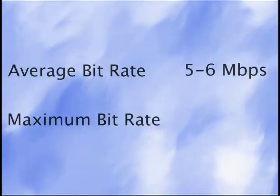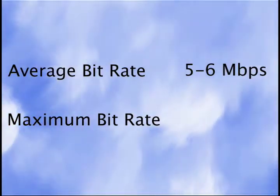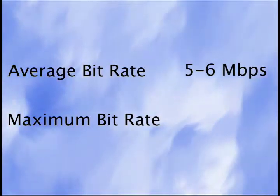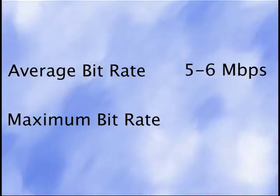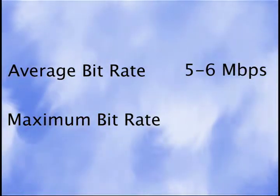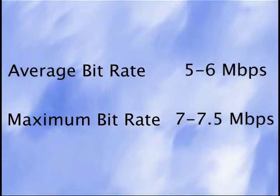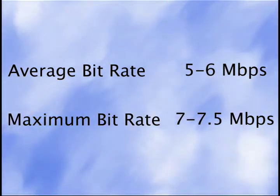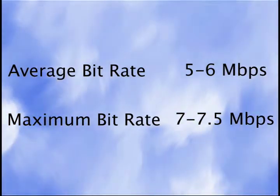The average and maximum bitrates are variables in compression that affect the quality of your compressed video. Most of the time the average bitrate should be set to 5 or 6 MB per second, and the maximum should be 7 to 7.5. You should never go over 8 MB per second, as some DVD players may not be able to read it.